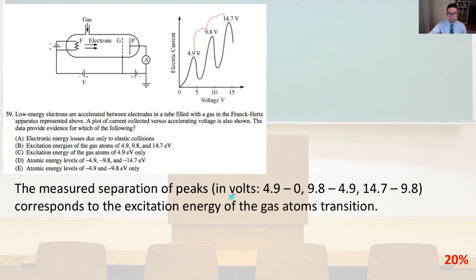so the 4.9 to the 9.8 to the 14.7, the measured separation of the peaks in volts, 4.9 minus 0 is 4.9, 9.8 minus 4.9 is 4.9, and then 14.7 minus 9.8 again is 4.9. This corresponds to the excitation energy of the gas, atom's transition, and so therefore it is answer C.